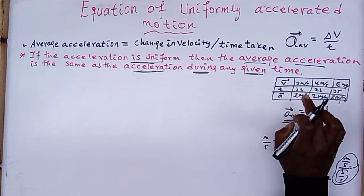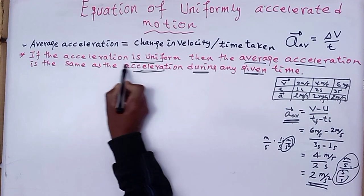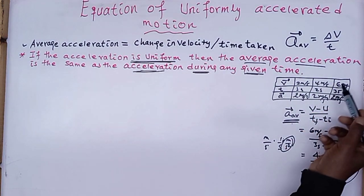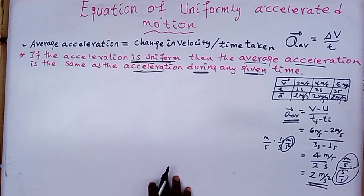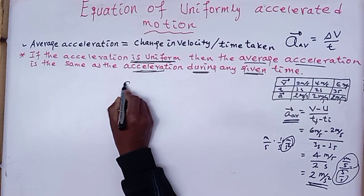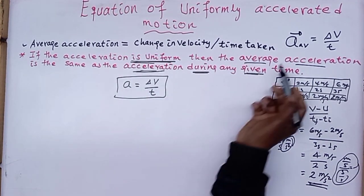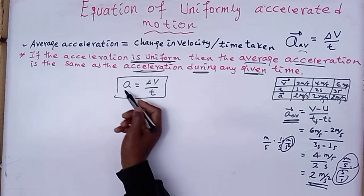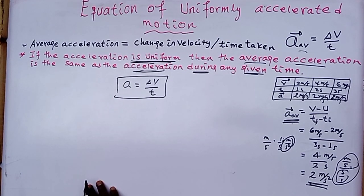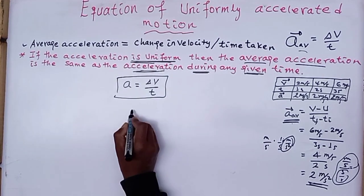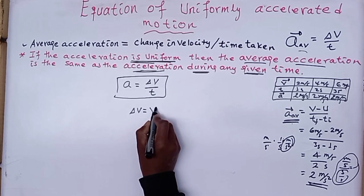If the acceleration is uniform — that is, it does not change — you can tell that average acceleration equals acceleration during any given time. Therefore, instead of average acceleration, we can use acceleration directly. To calculate change in velocity, we use the equation: change in velocity is equal to final velocity minus initial velocity.